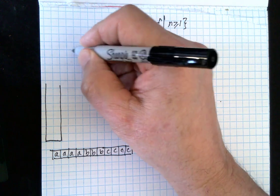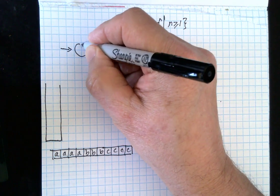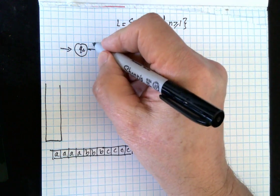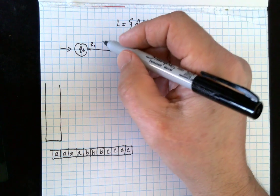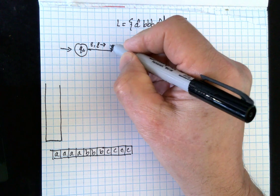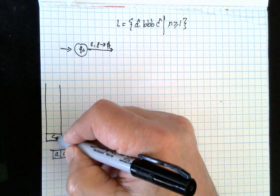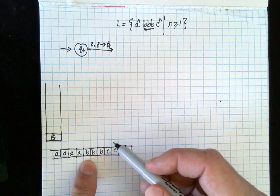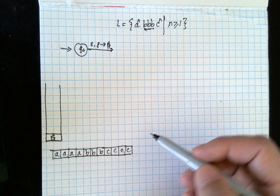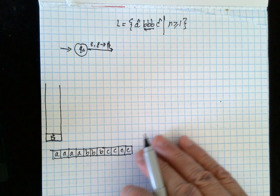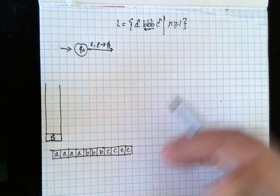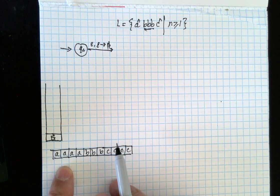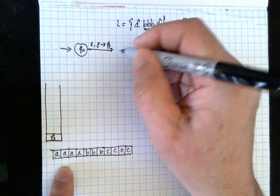Let's work on the problem. The first thing is we start with our starting state Q0. We transition without reading from the tape and without popping anything from the stack, but we push our dollar sign marker. Then we transition to Q1.